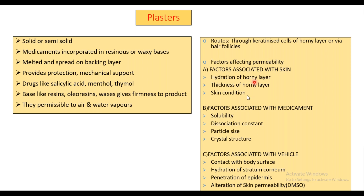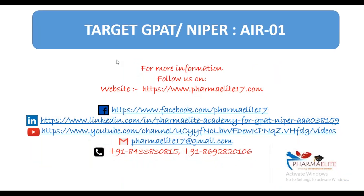Just remember the factors which are being listed. Different penetration enhancers include DMSO, oxazolidinones, and ethanol. That's enough for the chapter of ointments, creams, pastes, gels, and plasters. No need to refer any book, but if you still want to, you can refer Cooper and Gunn, which is for dispensing pharmacy. In case of any queries, feel free to reach out. All the best.